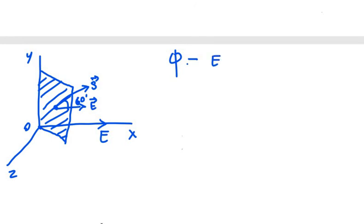Now we would be taking phi as E vector dot ΔS vector cos 60 degree. E in this case is...